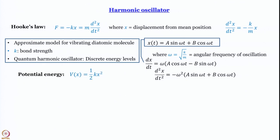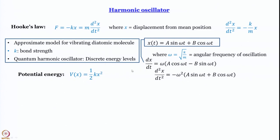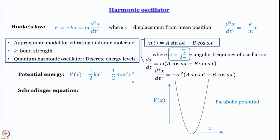To go into the quantum world, we need to write the Schrödinger equation. The potential energy in this case is half k x², which is a parabolic potential. Using the relationship between angular frequency ω and force constant k, we can write the potential energy as half m ω² x². Plugging into the Schrödinger equation: the first Hamiltonian term is the kinetic energy operator, and in place of potential energy we write half m ω² x².